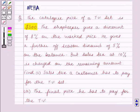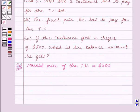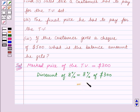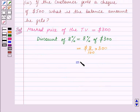It is given that the shopkeeper gives a discount of 8% on the marked price. So we will now calculate the discount of 8%. Discount of 8% is equal to 8% of $300, which is equal to $24.